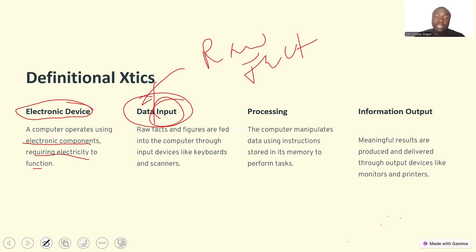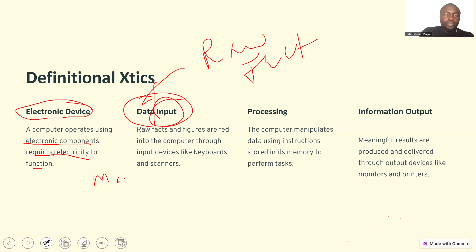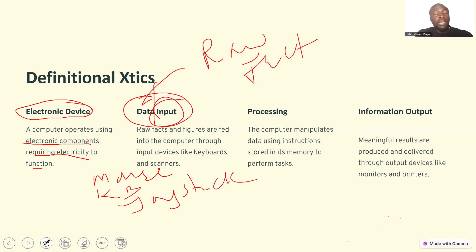Raw facts and figures are fed into the computer through input devices. We have many of them — keyboards, scanners, mouse, joystick, camera, microphone, and so on.